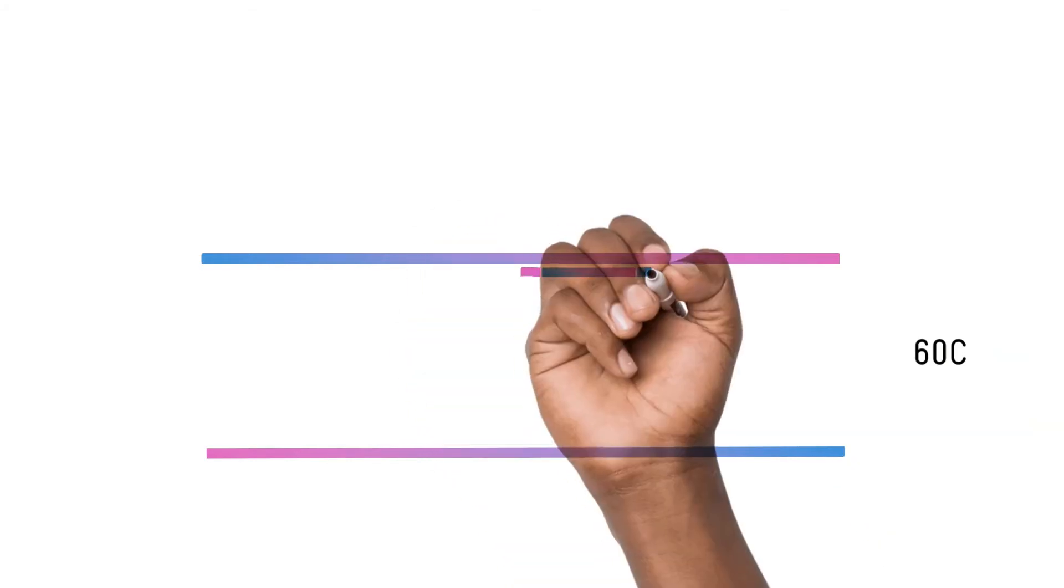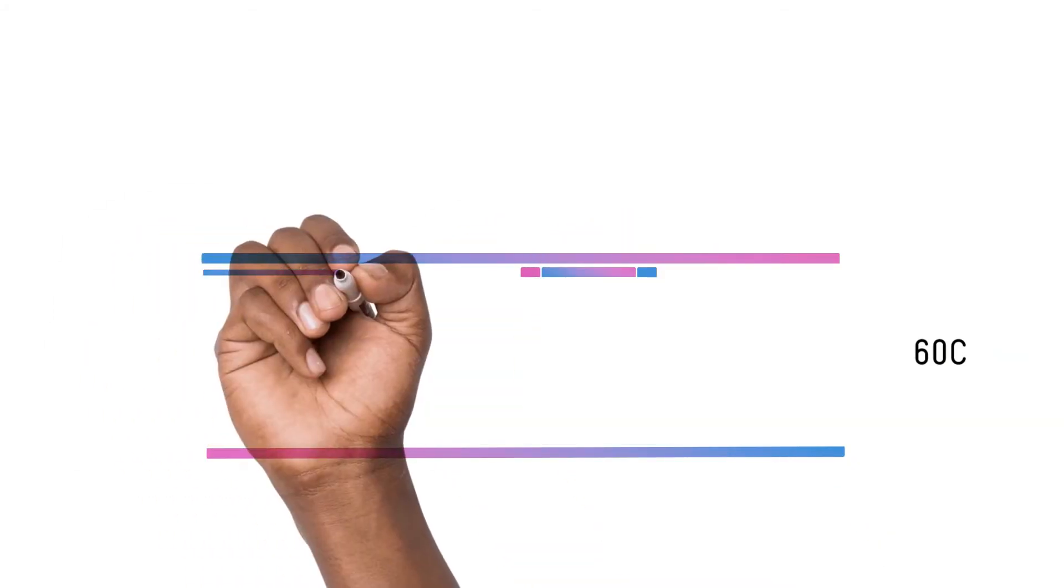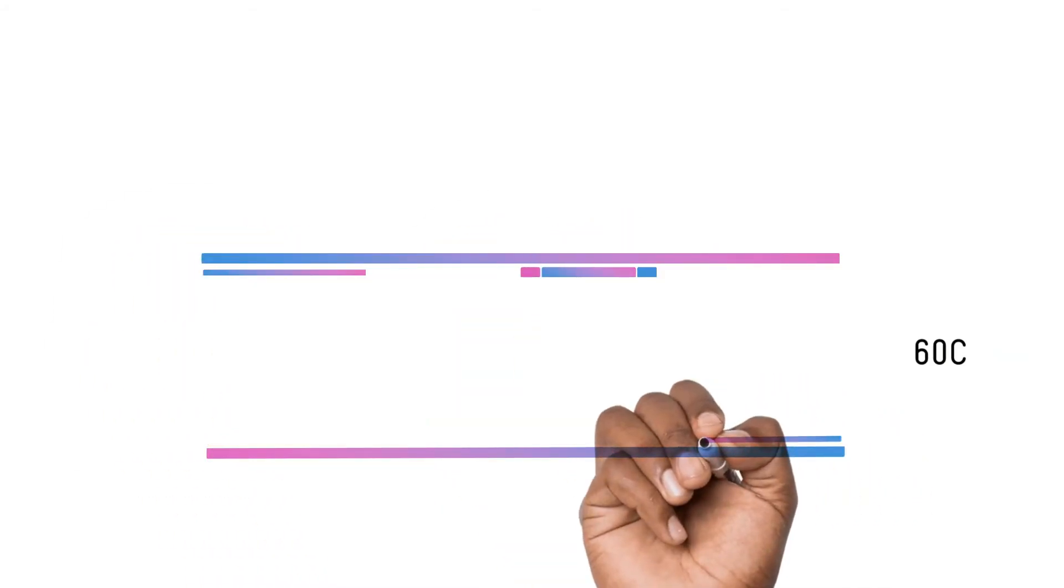A PCR test then contains small DNA tags called primers that are designed to bind specifically to the target DNA that you're trying to detect. If you cool the DNA in the lab a little, the primers bind to the virus DNA if it's present.